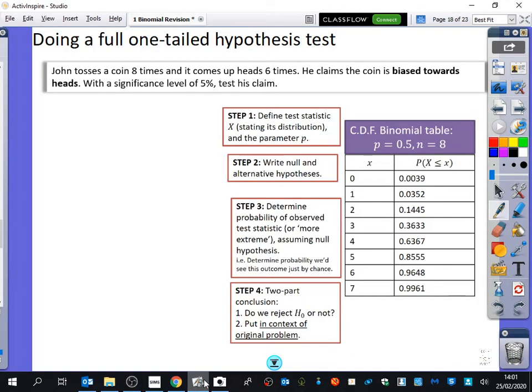Okay, so we're actually going to do some hypothesis tests now because we've got everything ready to go. We're going to finish this full question that we did. John tosses a coin eight times, and it comes up heads six times. He claims the coin is biased towards heads, with a significance level of 5%. Test his claim.